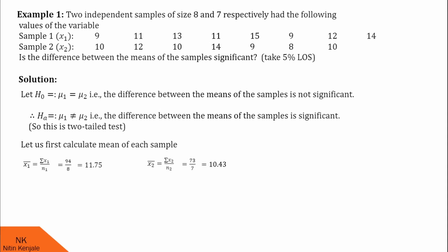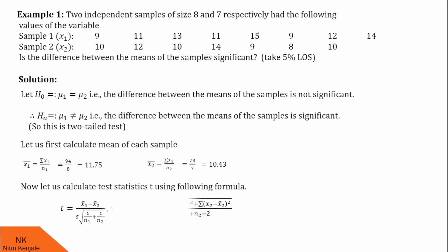Now, we use this to calculate test statistic T. The formula is: x1 bar minus x2 bar, divided by s into under root (1/n1 plus 1/n2). Here, x1 bar is 11.75, x2 bar is 10.43, s we have to calculate using the formula, and n1 and n2 are given in the question — they are 8 and 7 respectively.